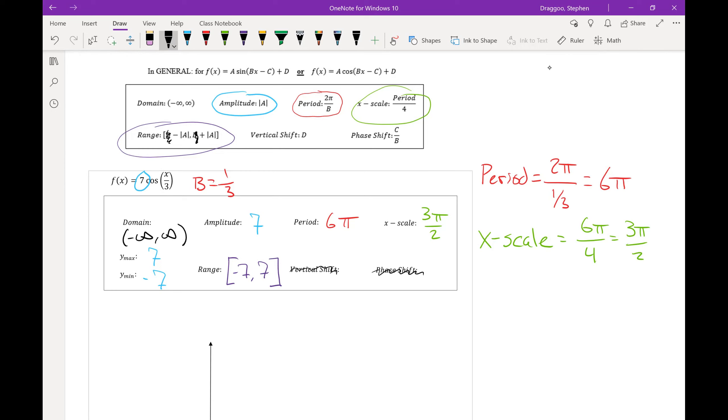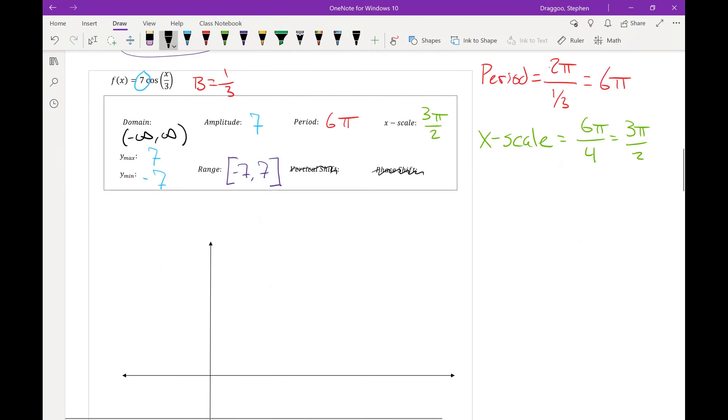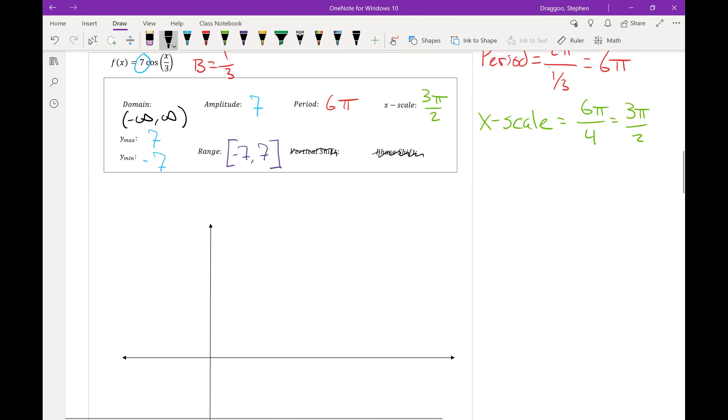Alright, now to put this stuff on the graph. So as with the last graph, I'm going to count out four additional tick marks away from zero. One, two, three, four. So I can get my five key points, the first of which will be at zero, and the next four at each of these tick marks. And those tick marks should count by the x scale. So 3π over 2, 6π over 2, 9π over 2, and 12π over 2.